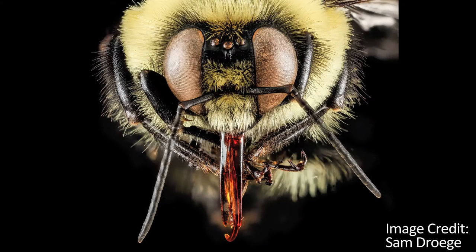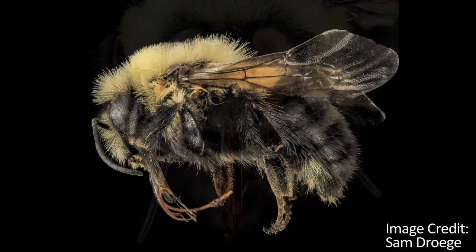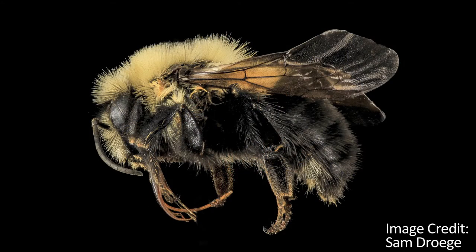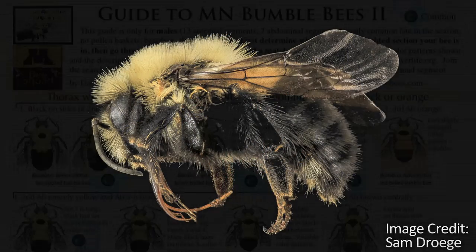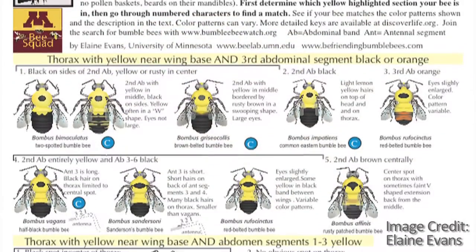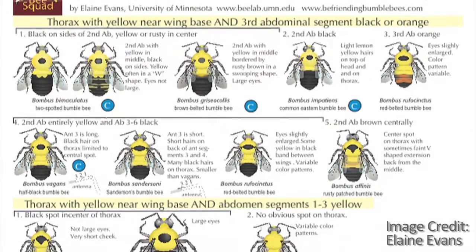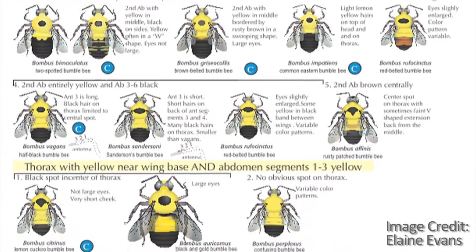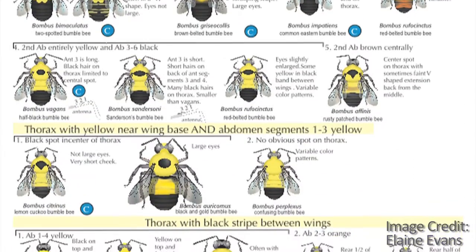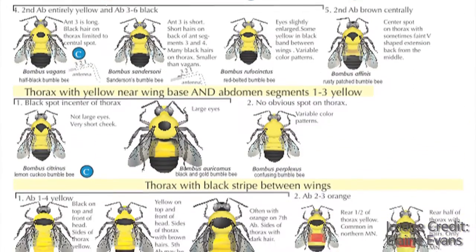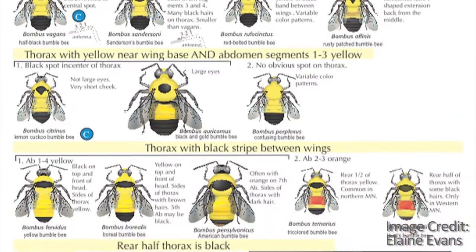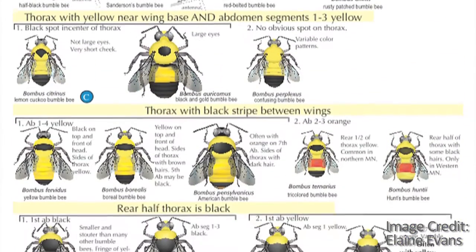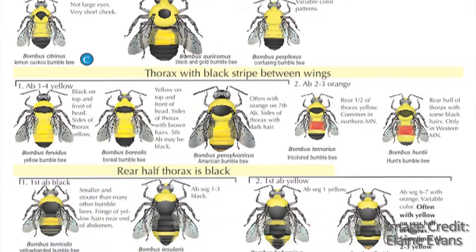To participate in the bumblebee portion of the Bee Atlas, you must attend a one-day workshop where you will learn to identify the 18 species of bumblebees in Minnesota and proper survey techniques. Volunteers will adopt a survey route and visit once each month from June to August.